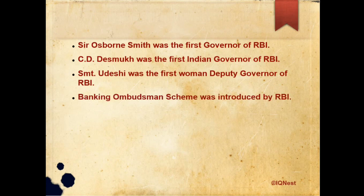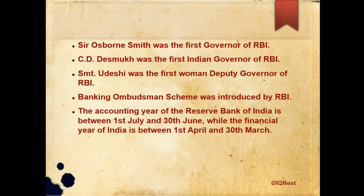The Banking Ombudsman Scheme was introduced by RBI. The accounting year of the Reserve Bank of India is between 1st July and 30th June, while the financial year of India is between 1st April and 30th March. The bank rate is decided by RBI.